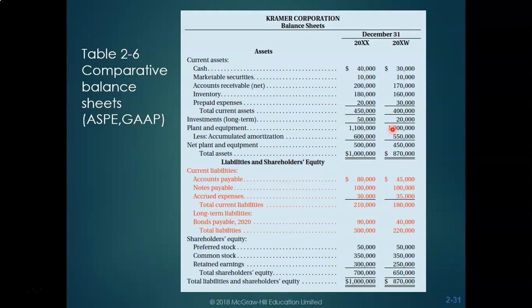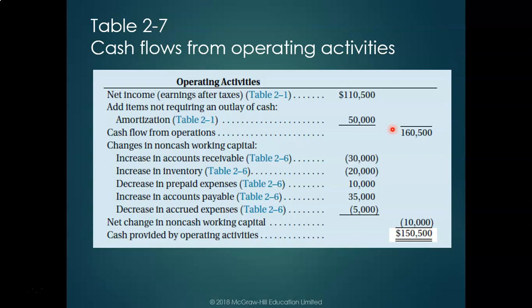Starting with operating activities: net income is $110,000. From our income statement, amortization was $50,000, so that is added back. This gives us a starting cash flow from operations of $160,500.